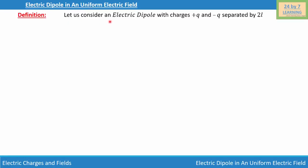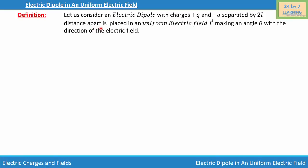Electric dipole in a uniform electric field. Let us consider an electric dipole with charges +q and -q separated by 2l distance apart, placed in a uniform electric field E making an angle theta with the direction of the electric field.